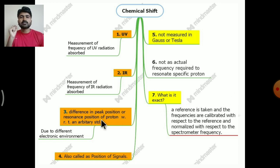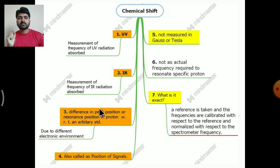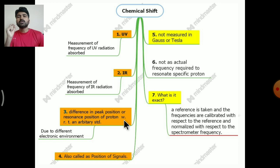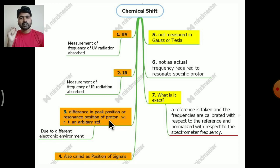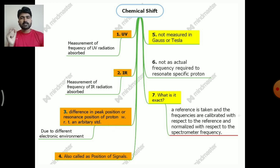So what is the exact chemical shift in proton NMR spectroscopy? Chemical shift is the difference in the peak position or resonance position of a proton with respect to an arbitrary standard. We have taken one reference material which is called tetramethylsilane (TMS), and whatever the peak position or resonance position with respect to TMS is called the chemical shift.